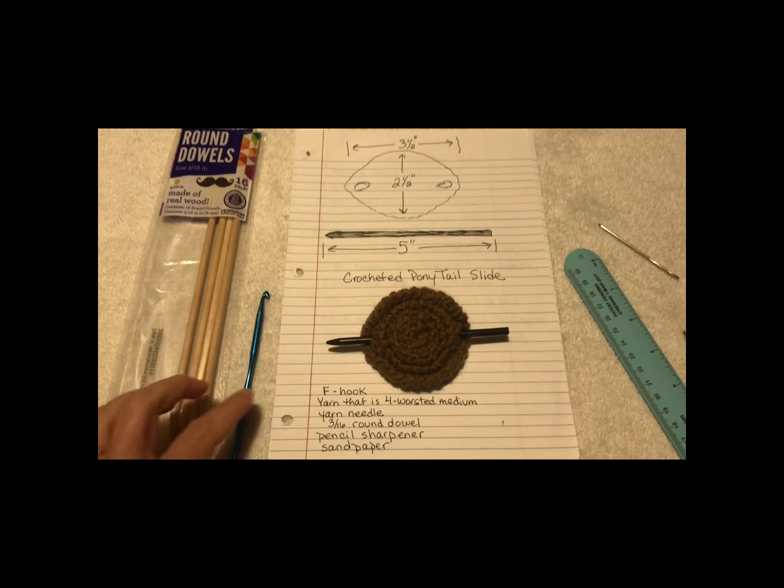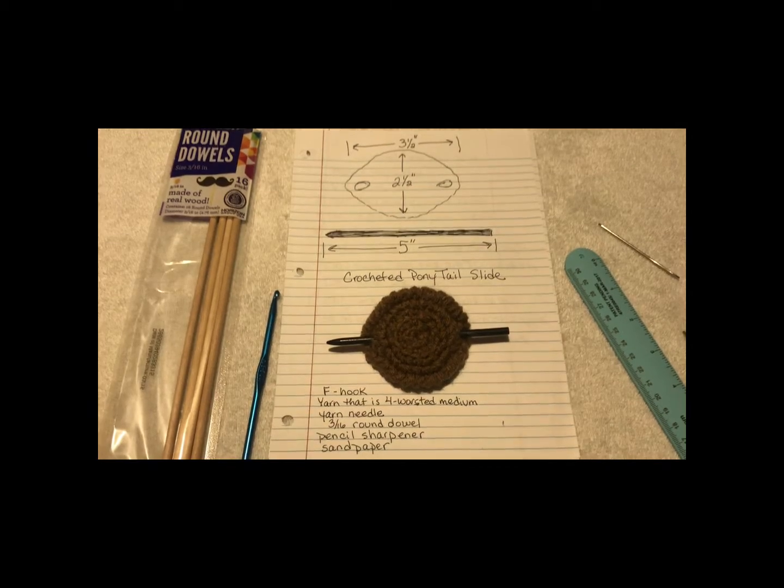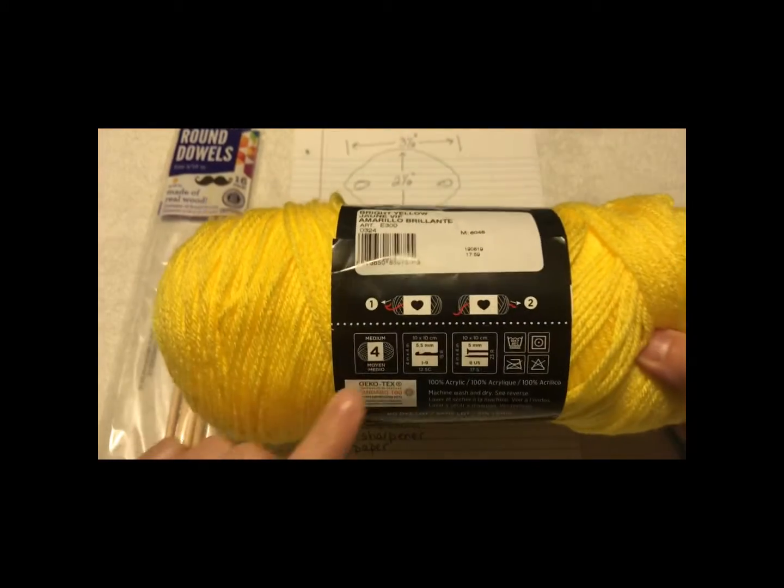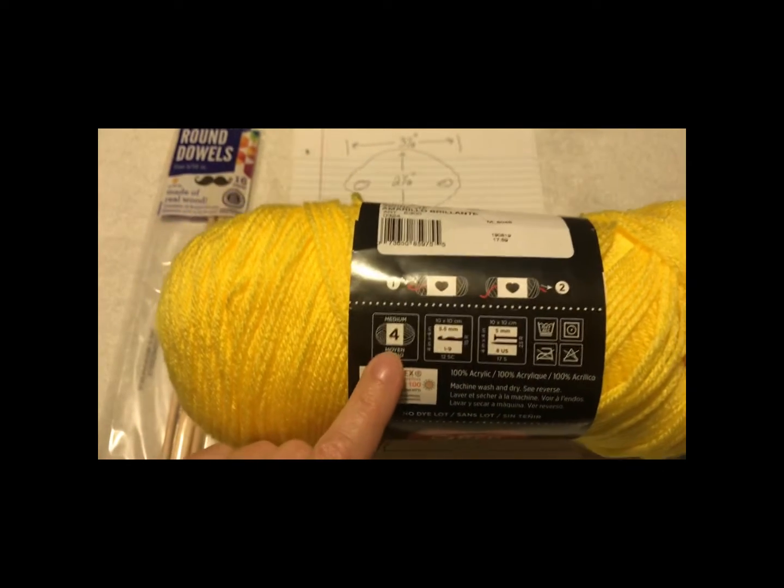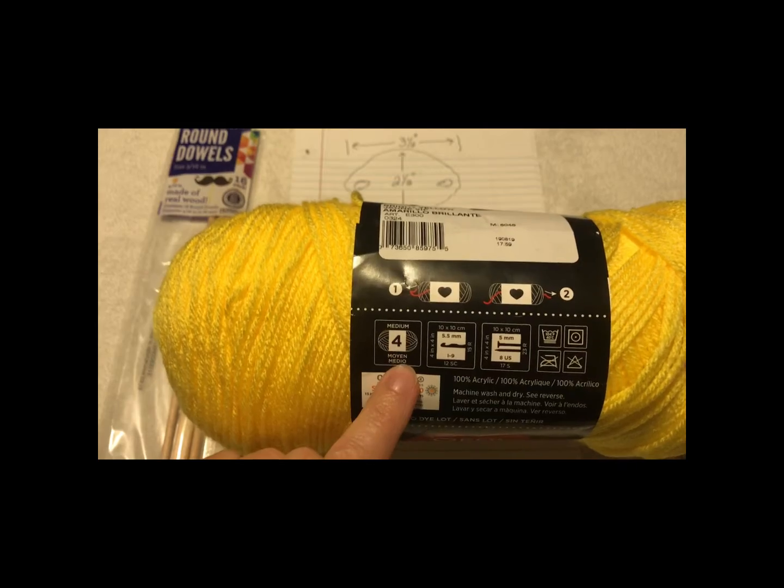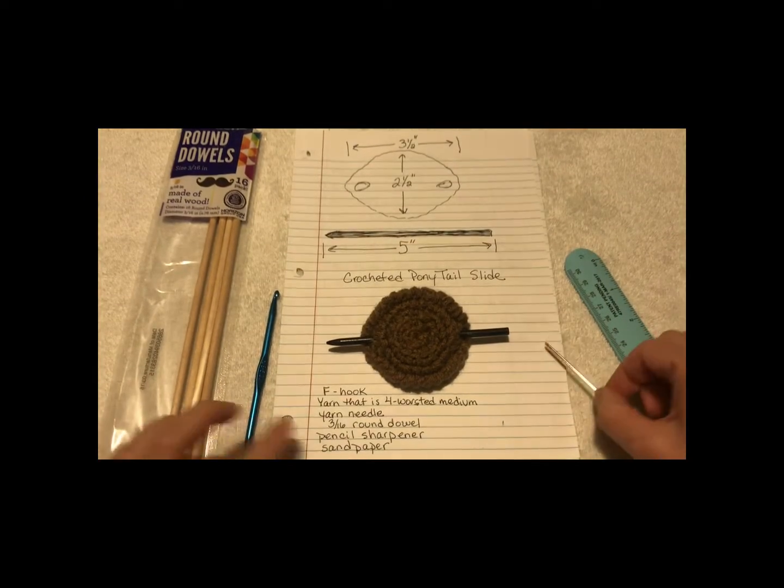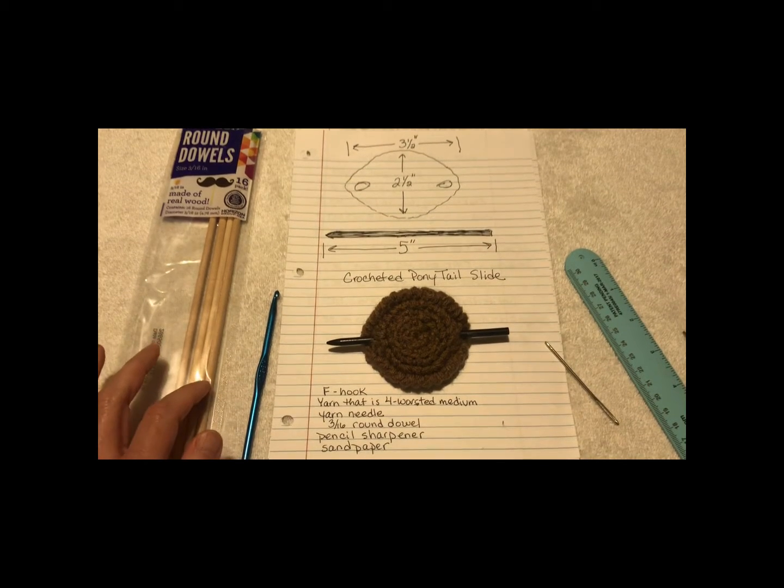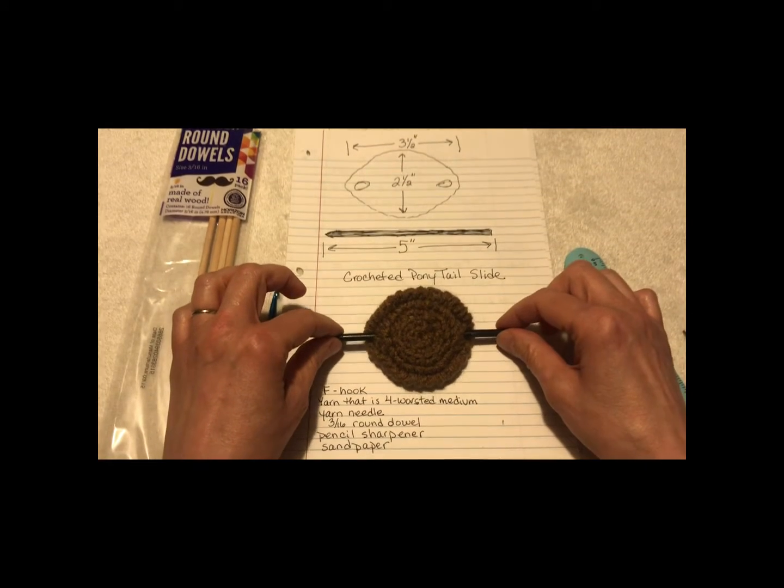The supplies you're going to need are an F-hook, yarn that is a 4-worsted medium, and you can tell that by right here. It'll say 4 medium on the sleeve. Your yarn needle and a 3-16th round dowel, wooden dowel, that's for the slide.